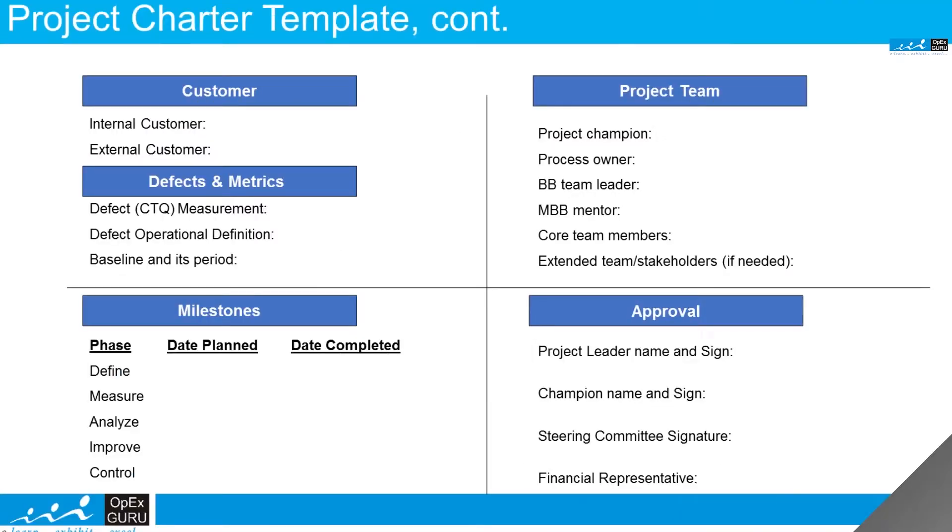The last element or eighth element is about approval. Key stakeholders have to sign this particular document. This can be a financial head, apex committee member, and Six Sigma project leader.